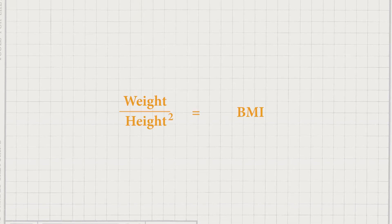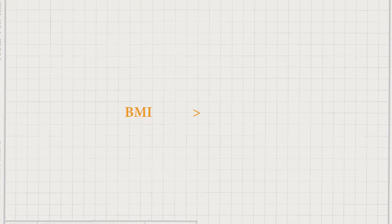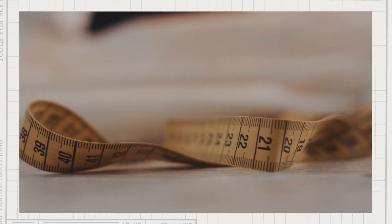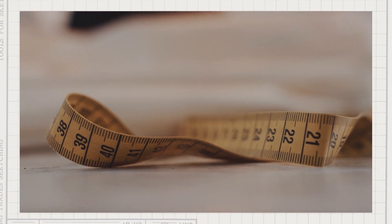How would one know if they live with obesity and how can they manage their condition? To identify obesity, you would measure weight and height and calculate the body mass index. In adults, a body mass index higher than 30 kilograms per square meter helps with the diagnosis of obesity. You can also measure waist circumference — in women, over 80 centimeters, and in men, over 90 centimeters indicates a high risk of the consequences of obesity.